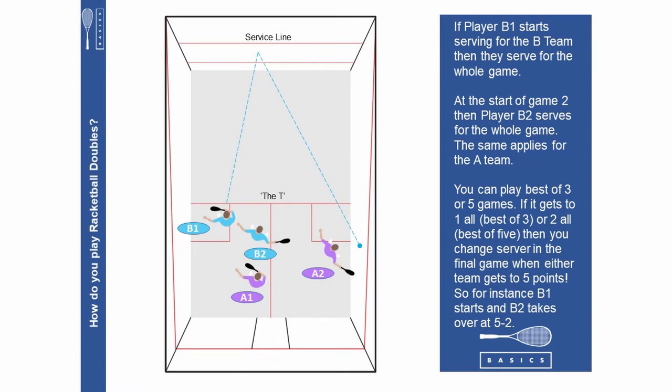If player B1 starts serving for the B team then they serve for the whole game. At the start of game two then player B2 serves for the whole game. The same applies for the A team. You can play best of three or five games. If it gets to one all or two all then you change server in the final game when either team gets to five points.